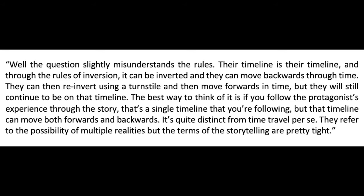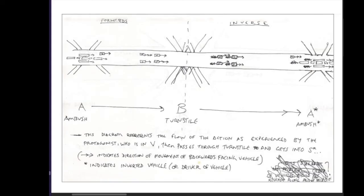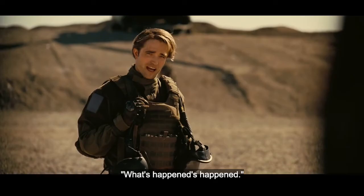Nolan also notes that the terms of the storyline are pretty tight regarding multiple realities. It's helpful to see some of Nolan's own diagrams and how he graphically depicts inversion on a timeline. The way the movie is presented to us already includes the moment that future selves have reversed and made those changes. We see this play out again in the present with the understanding that they can't change anything — what's happened's happened, as Neil likes to say.